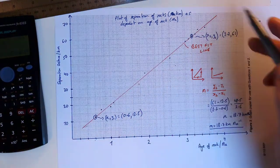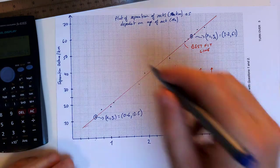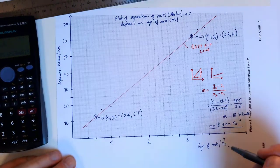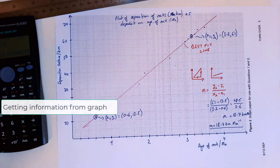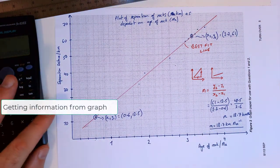The final thing is let's use the data, let's use the graph to find out some data. So the first prompt here is can we determine the age of the rock when the distance was 30 kilometers.